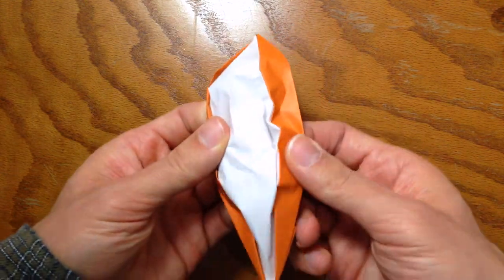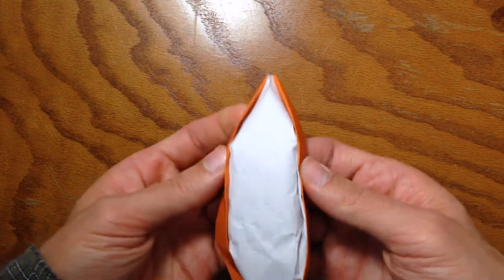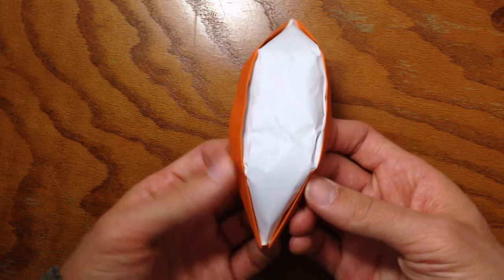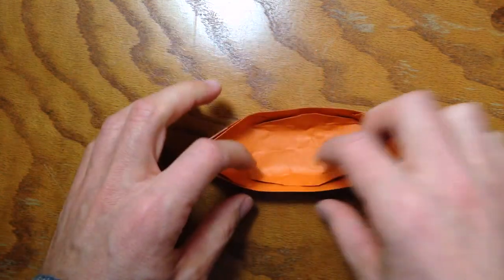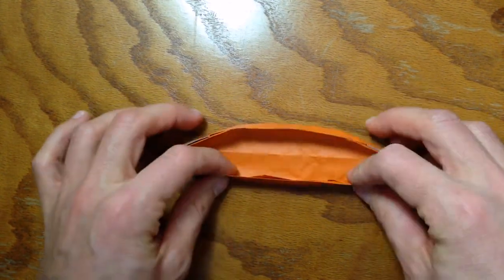And again, you see how everything is getting pretty wrinkly here. It is possible to reverse this without getting everything so wrinkly, but it's a little more challenging. And we don't really care that much about the wrinkles. And then you can smooth it out.